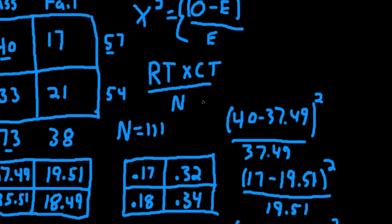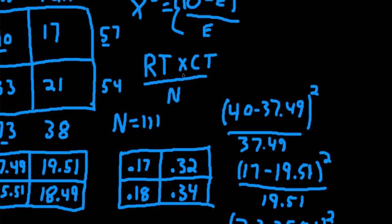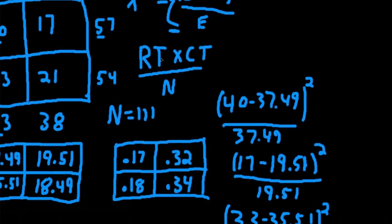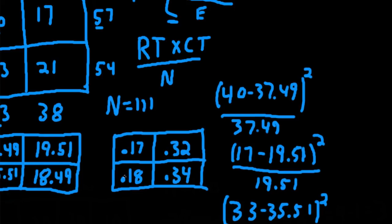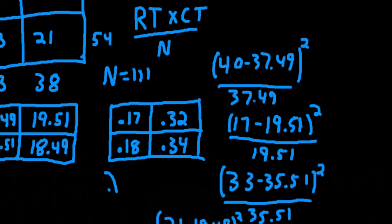So we now have observed minus expected squared divided by expected. The last step is just to add up those values to get our chi-squared value. So we have 0.17 plus 0.32 plus 0.18 plus 0.34. And we get approximately 1. So our chi-squared value is 1. Almost certainly is not going to be anywhere near any cutoff we might use for statistical significance.